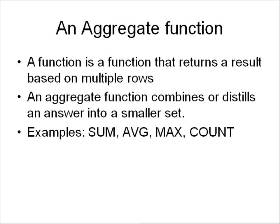An aggregate function is a function that returns a result based on multiple rows. For example, if you want to sum up the hours column or the wage column — if you want to sum or average — you're taking a whole group of rows and getting one output. If you've got 100 rows and you add them up, you have one result, whatever that sum may be.